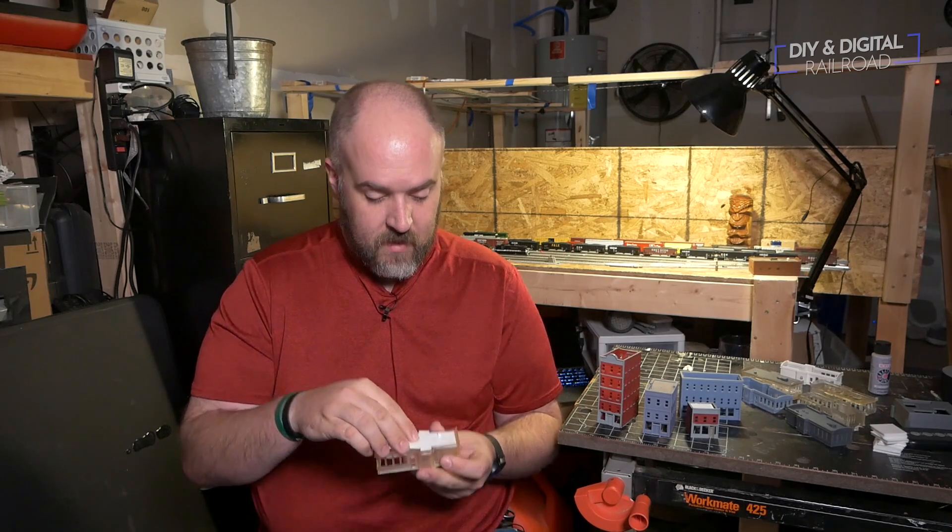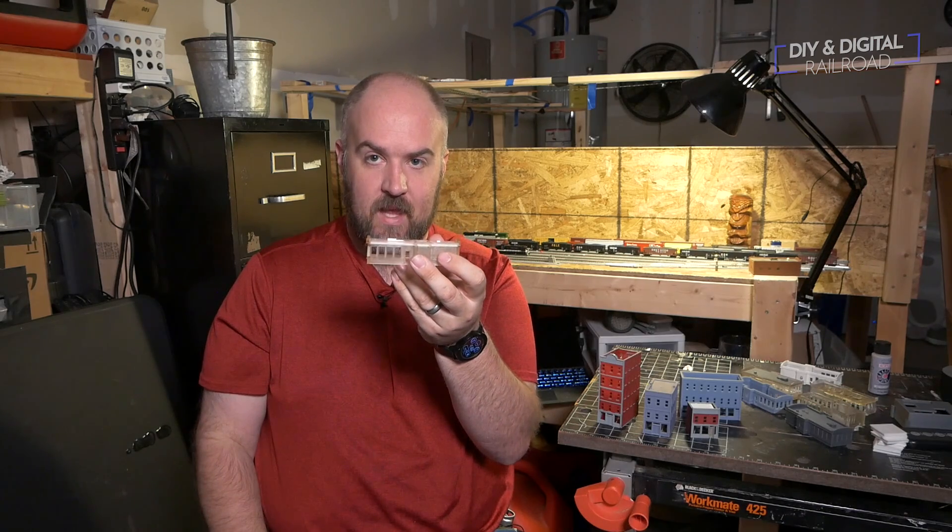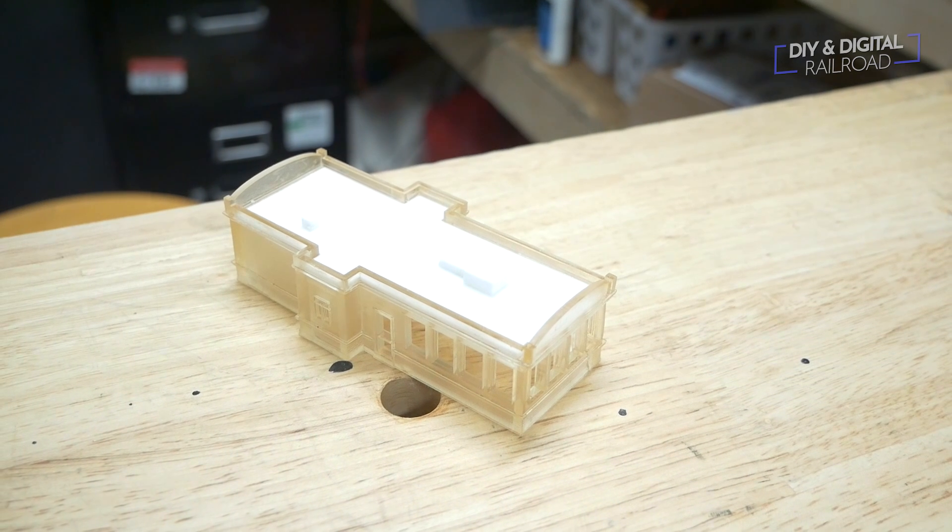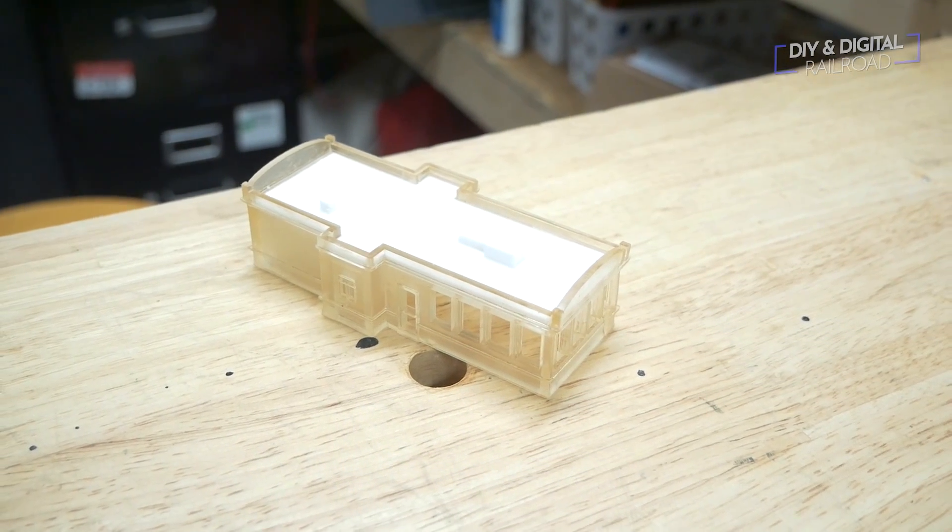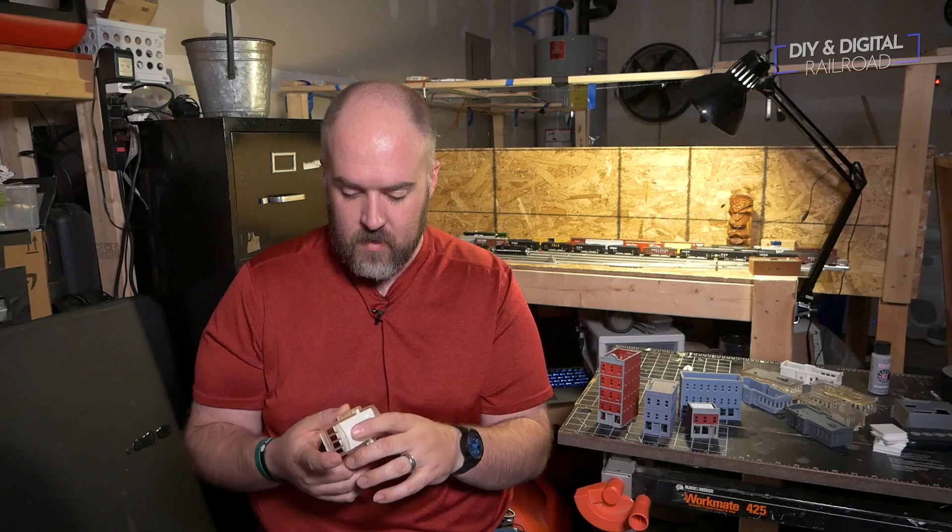And it just drops in and snaps in just like that. It's perfectly fitted. You don't have to cut any styrene, anything like that. It's actually got some roof details on it. But I'm probably not going to have those on there for the final version, just because you guys will want to do some detail of your own.